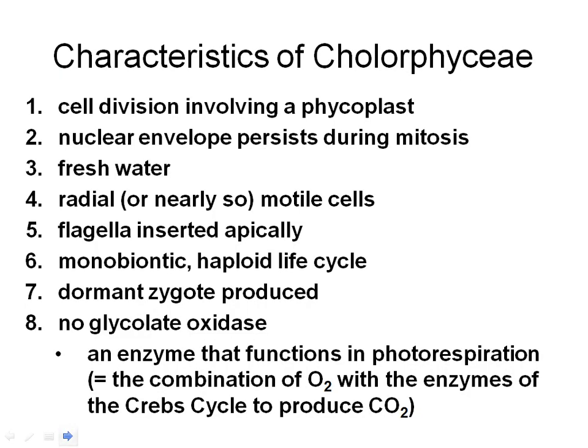The Chlorophyceae have a number of characteristics that make them unique and a number shared with the Chlorophyta. A unique characteristic is cell division involving a phycoplast — those accessory microtubules that are parallel to the cell plate. This occurs when the nuclei remain close together and the nuclear membrane remains intact during nuclear division, with a short-lived spindle. The nuclear envelope also persists during mitosis and meiosis.